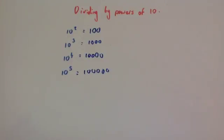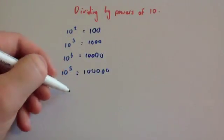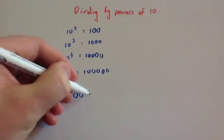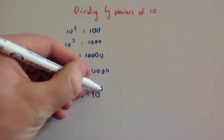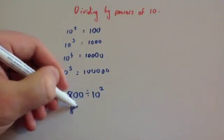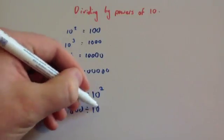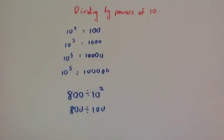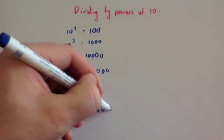So whenever you're dealing with a division with a power of 10, for instance, if you had 800 divided by 10 squared, what I would do is change this 10 squared into 100, so you would get 800 divided by 100. And from the division by 10, 100, or 1000 video, you'll see how to do that, but you just take off 2 zeros whenever you're dividing by 100, so the answer would be 8.